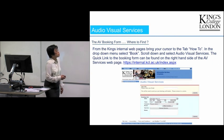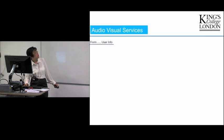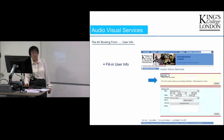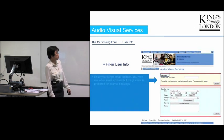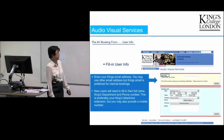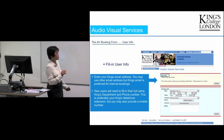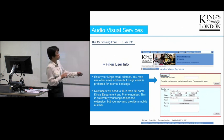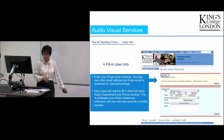Now we'll start completing the form. Let's fill up first the user info. The user info needs your email address. If you're a new user, you will have to fill in your full name, King's department, and phone number. After you fill that up, the system will retain your data, so next time you book you don't have to fill in your full name and phone number.